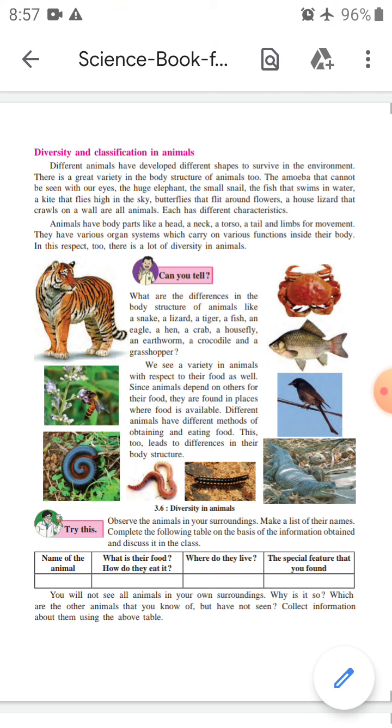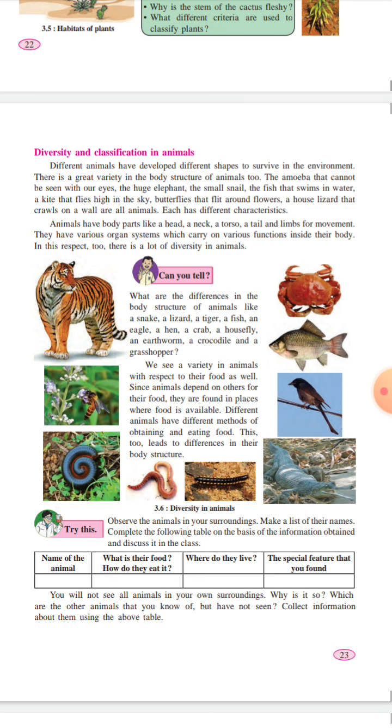See, there is one question for you: What are the differences in the body structure of animals like snake, lizard, tiger, a fish, an eagle, a hen, a crab, a housefly, an earthworm, a crocodile, and a grasshopper? What are the differences in the body structure of these animals?